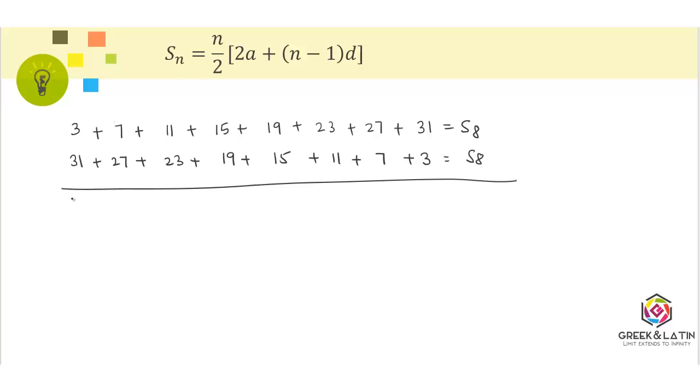3 plus 31 equals 34, plus 34, 34, 34. So how many times are we going to get 34? S8 plus S8 would give 2 times S8, and we get 34 eight times. So this is 8 times 34 equals 2 times S8.